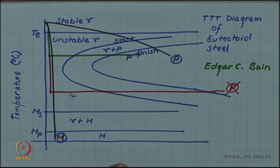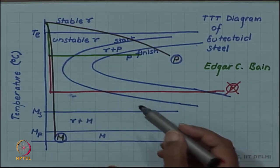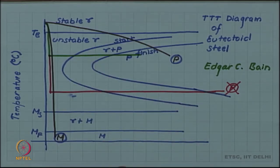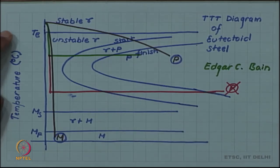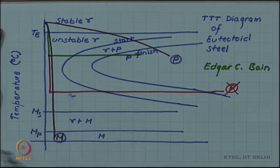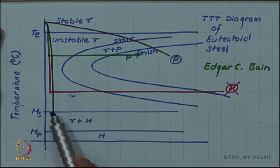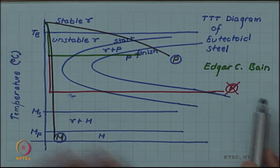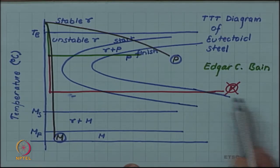He was surprised by this, because nobody had done this before. Annealing, normalizing, and quenching were all historical processes before Bain, and he had given a better explanation through his TTT diagram of these well-known heat treatments. But nobody had tried quenching to a temperature below the nose of the C curve and keeping it above the martensite start temperature. At such an intermediate temperature — below the nose and above Ms — austenite transforms to a structure which does not resemble pearlite. This new structure was later named bainite in honor of Bain.